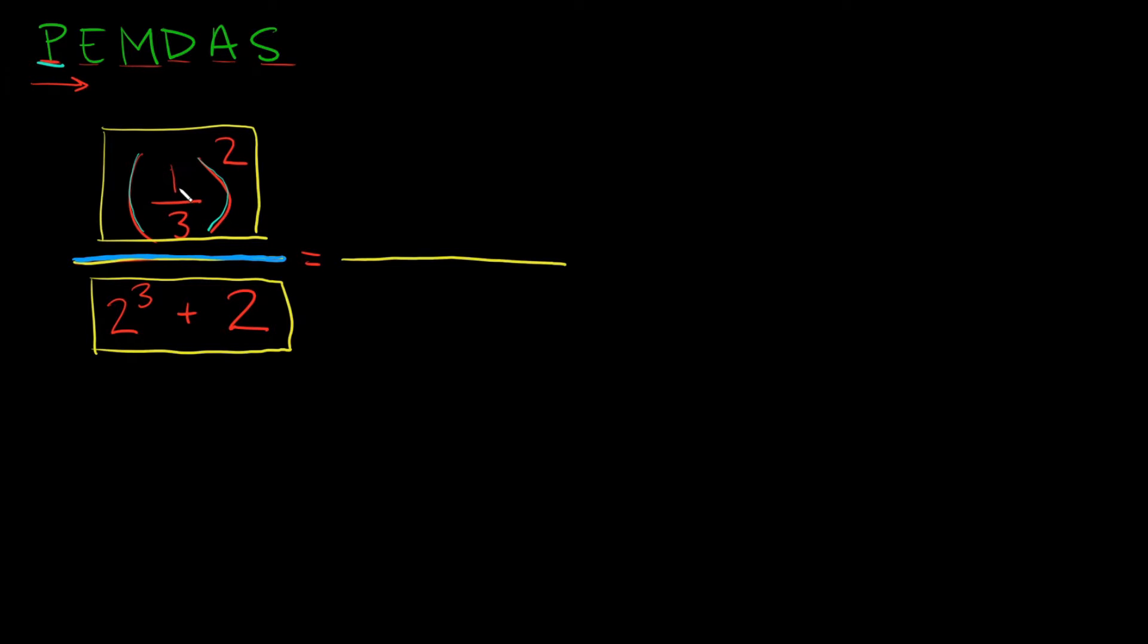So inside of the parentheses we have one over three. Can we simplify that anymore? Well in this case, no we can't, because one third is just a number. That's as simplified as it can get. So that means we're done with the parentheses.